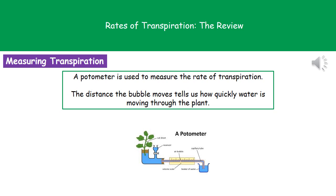If our air bubble moves a long distance, then we know we've got quite a rapid rate of transpiration. If it only moves a very small distance, we know transpiration is happening slowly.